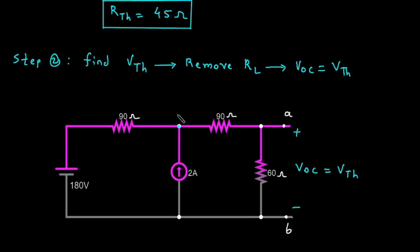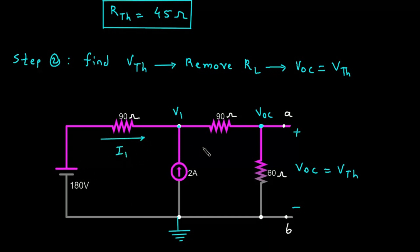Let's say this node voltage is V1, and this node voltage is VOC. Let's say this is the reference node or ground node. This is current I1, this is current I2, and this is current I3. Current flows from positive terminal to negative terminal. The current source direction is towards the reference node.